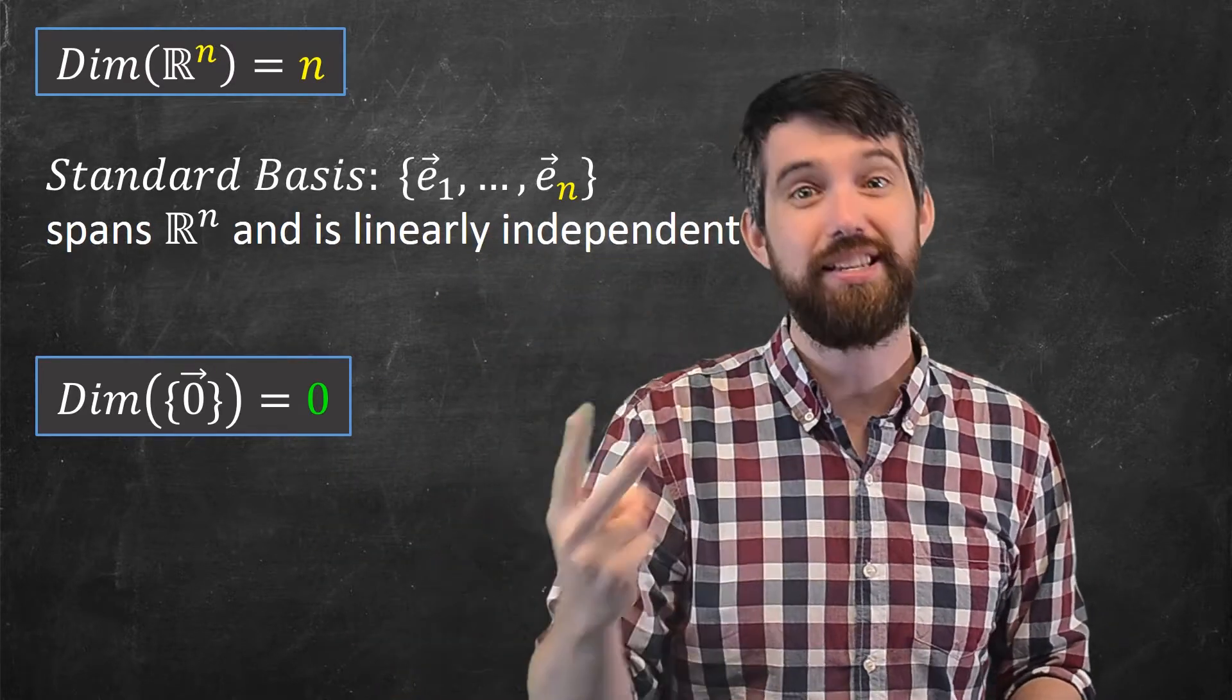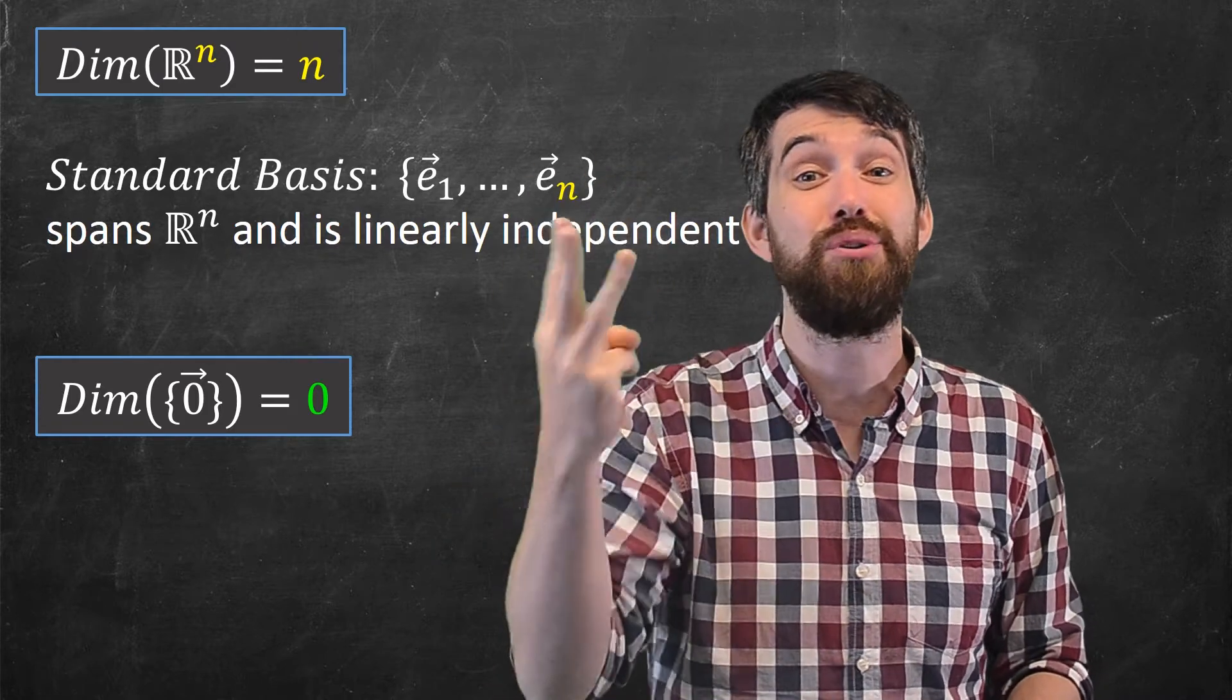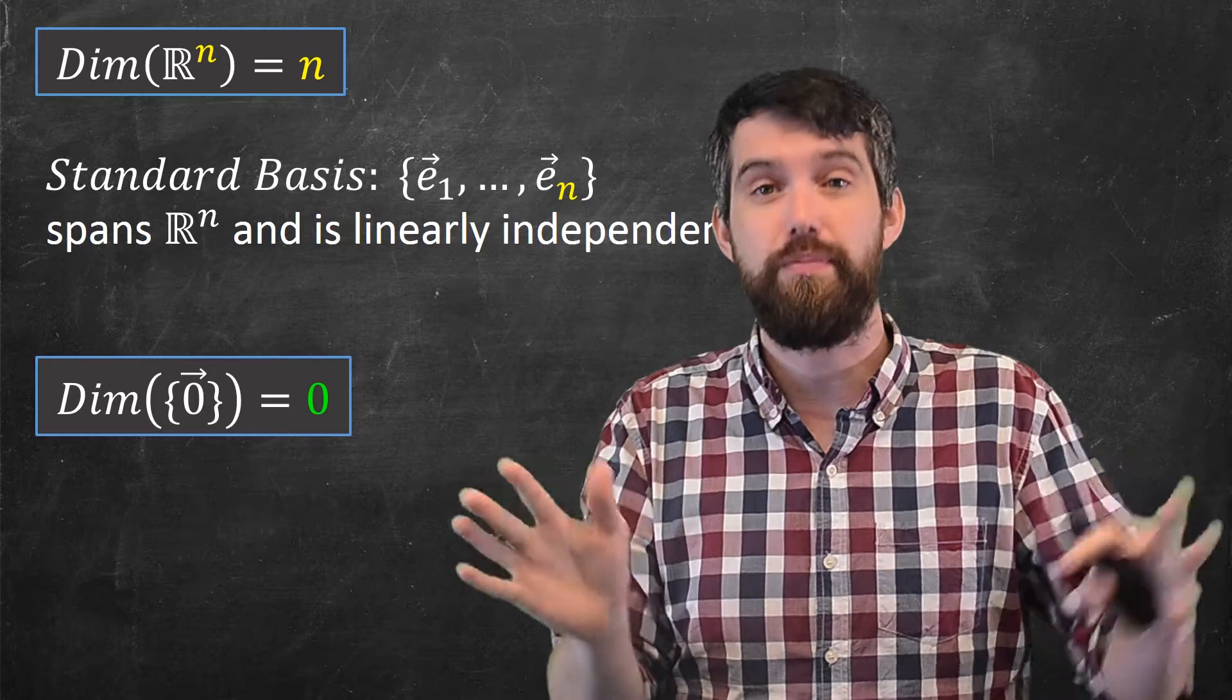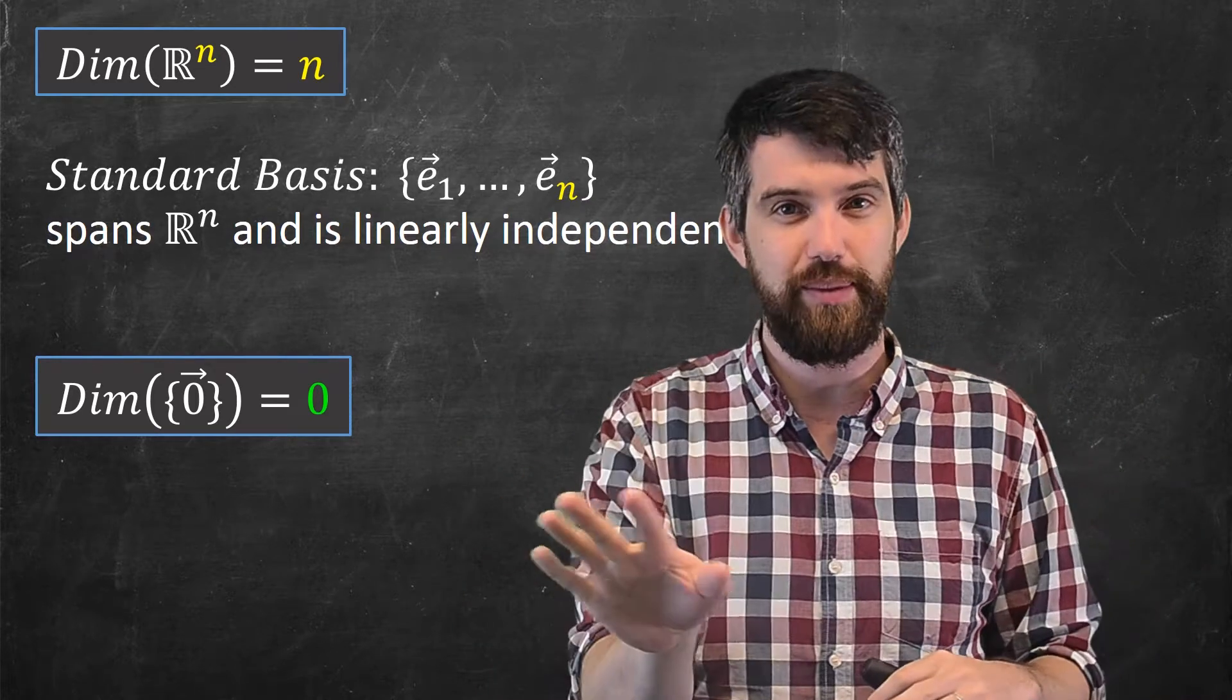They were closed under addition, closed under scalar multiplication, but they also had the zero vector in it. That was a requirement. So this is the smallest subspace that could ever possibly exist. The empty set isn't a subspace.